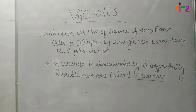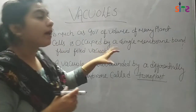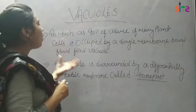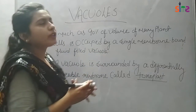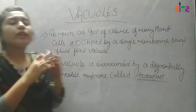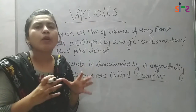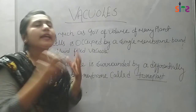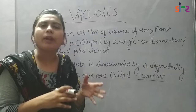Since plants use this heavily: 90% of the volume of many plant cells is occupied by a single membrane-bound, fluid-filled vacuole. This means 90% of the volume of many plant cells is occupied by the vacuole, because it has a single membrane structure which holds a lot of fluid. That is why it plays the most important role in plant cells.